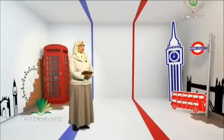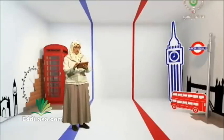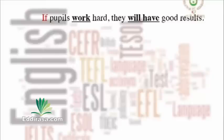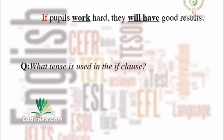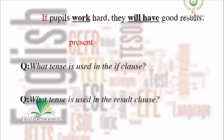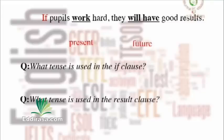Study the example: if pupils work hard, they will have good results. What tense is used in the if clause? It's the present tense. They will get good results — which tense is used in the result clause? We have the future simple here. So what type of if clause is this? This is the first type.